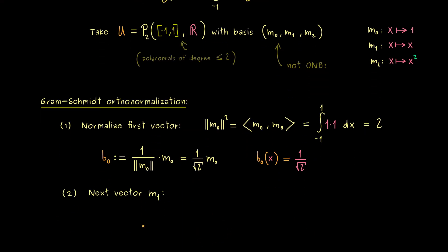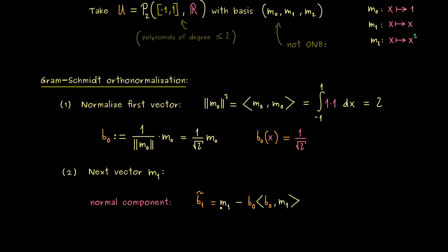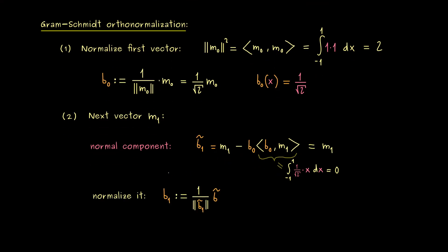Then let's go to the next step, where we deal with the vector m1. Please recall, we take the orthogonal projection but then we consider the normal component. Essentially, what we have to calculate is this inner product here. We can do this very quickly because it's just the integral from minus 1 to 1 of the constant function times x. It's not hard to see at all that this is actually 0. In other words, our b1 tilde here is simply m1 again. So you see, the orthogonality of m0 and m1 was already given.